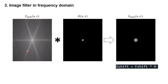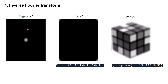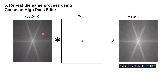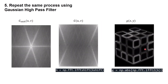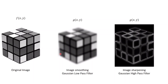Next, we filter our image in the frequency domain by multiplying our image with our Gaussian filter, giving us the filtered image in frequency domain. Before taking the inverse Fourier transform, we need to return the low frequency back to the corner using the NumPy function np.fft.ifftshift. Finally, we take the inverse Fourier transform and the absolute value to get our filtered image in spatial domain. We repeat the same process to sharpen our image using the Gaussian high pass filter.